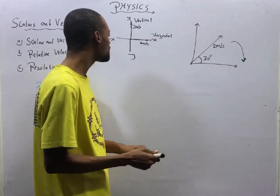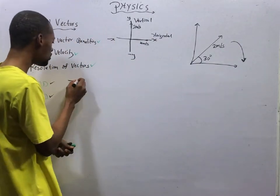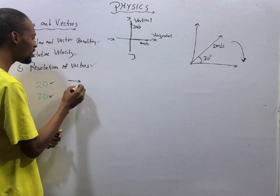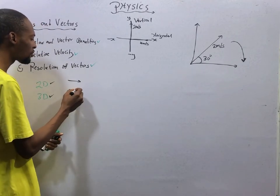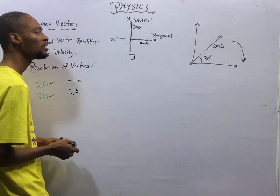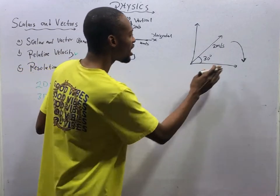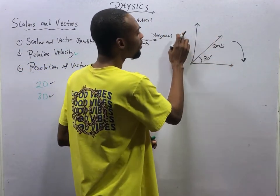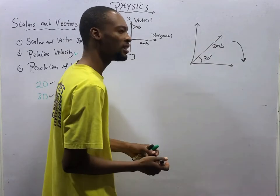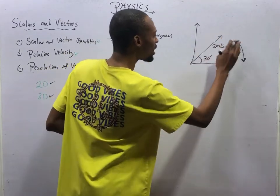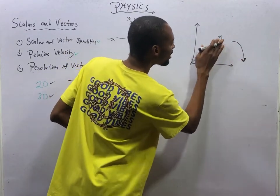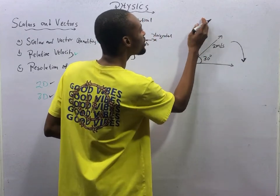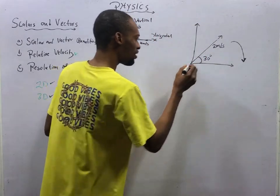If vectors are moving in the same direction, they sum up. If they are moving in different directions, you subtract them. Look at this arrow — this shows this direction, this direction, and this. You notice that the three are moving in the same direction. If you push it here, the arrow is facing here; if you push it here, the arrow is facing up, which is also in this direction.